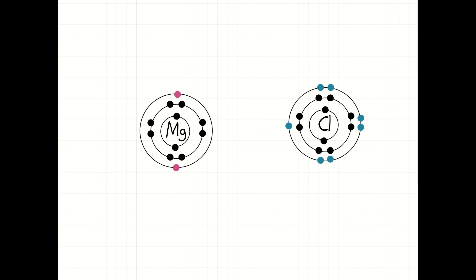As we said previously, chlorine needs one electron to have a full outer shell. So, magnesium gives chlorine one of its electrons. And happy days, chlorine now has formed a stable chloride ion.